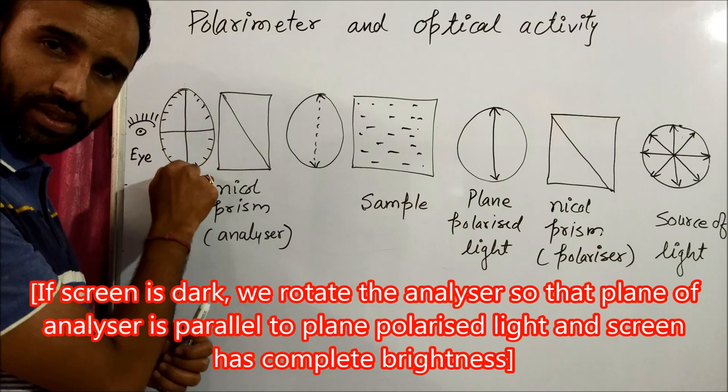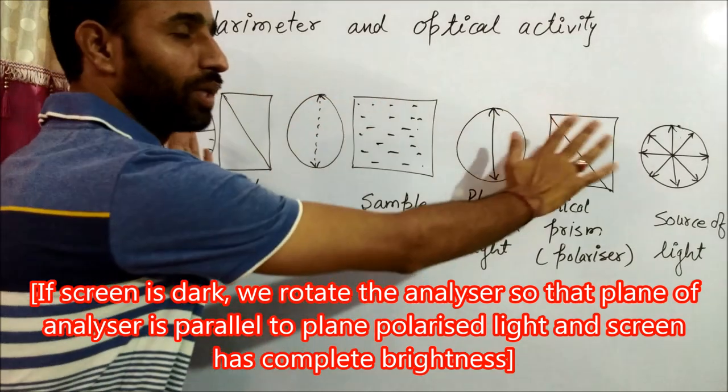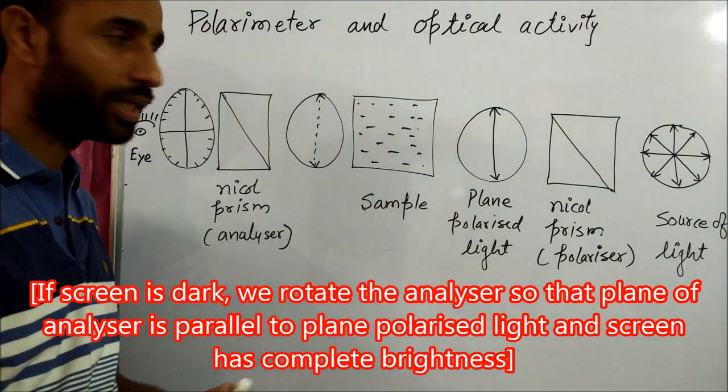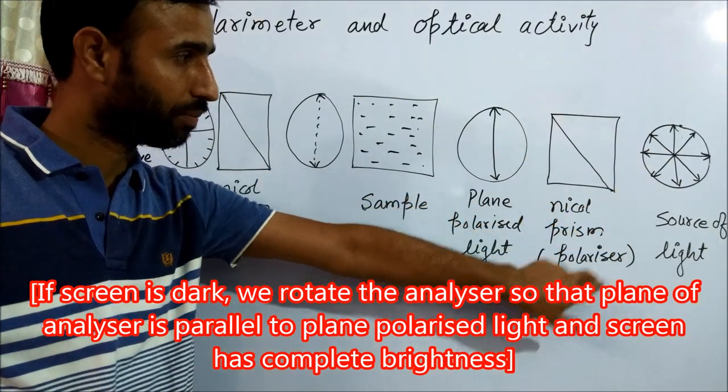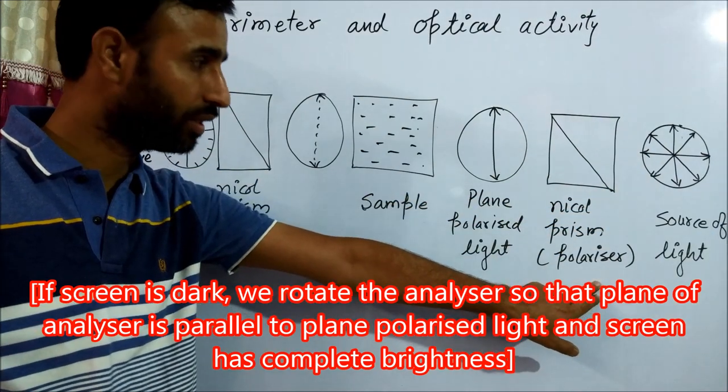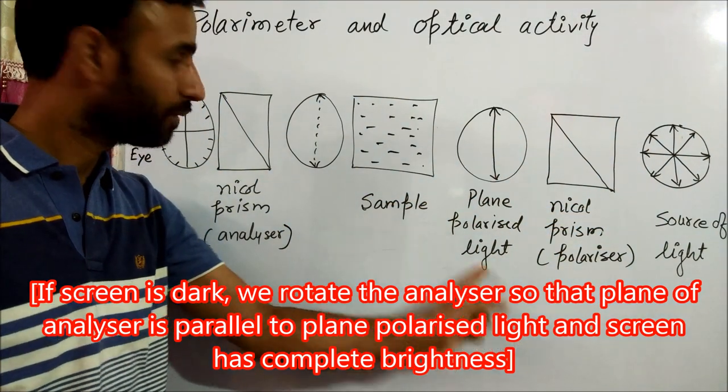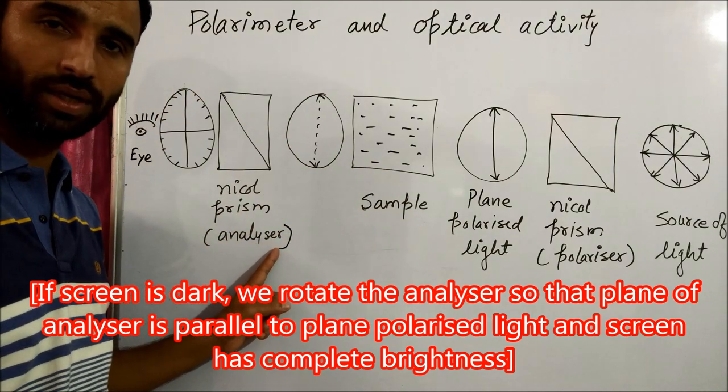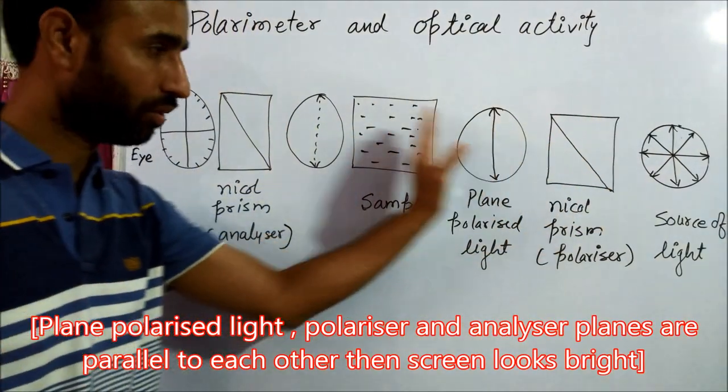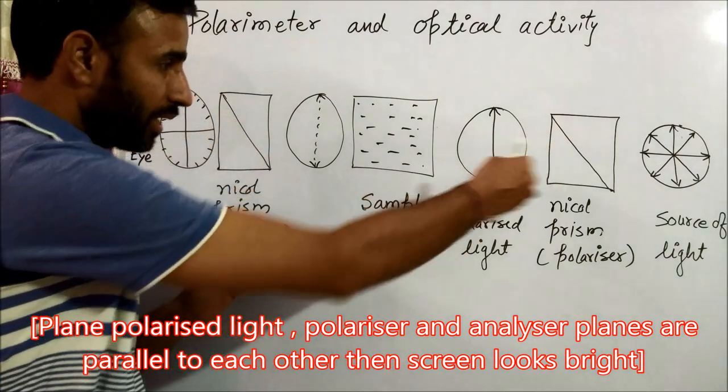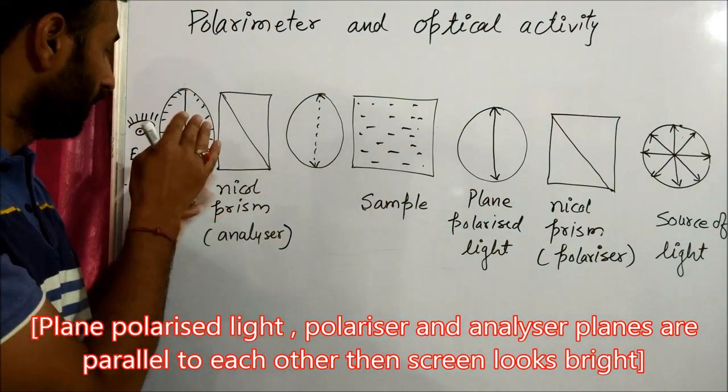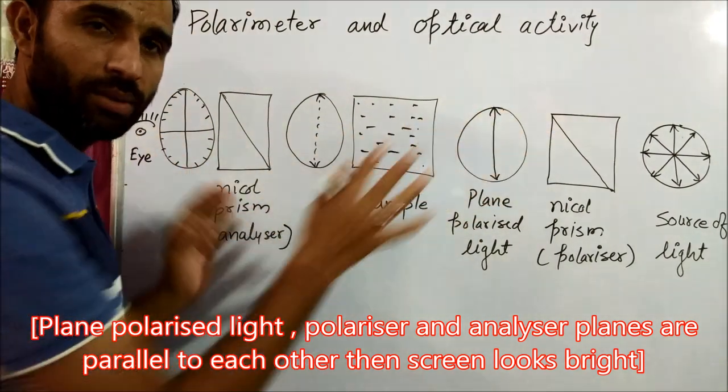It is complete brightness, that means our instrument is calibrated. That means the plane of this nickel prism polarizer plane to the light plane and analyzer plane, they are parallel to each other. All are parallel. That is why light can pass through it. So now the instrument is calibrated.